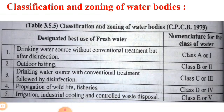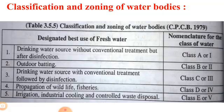Class D water is designated for propagation of wildlife or fisheries. Class E water is designated for irrigation, industrial cooling, and controlled waste disposal. This is the classification and zoning of different types of water bodies according to their intended uses.